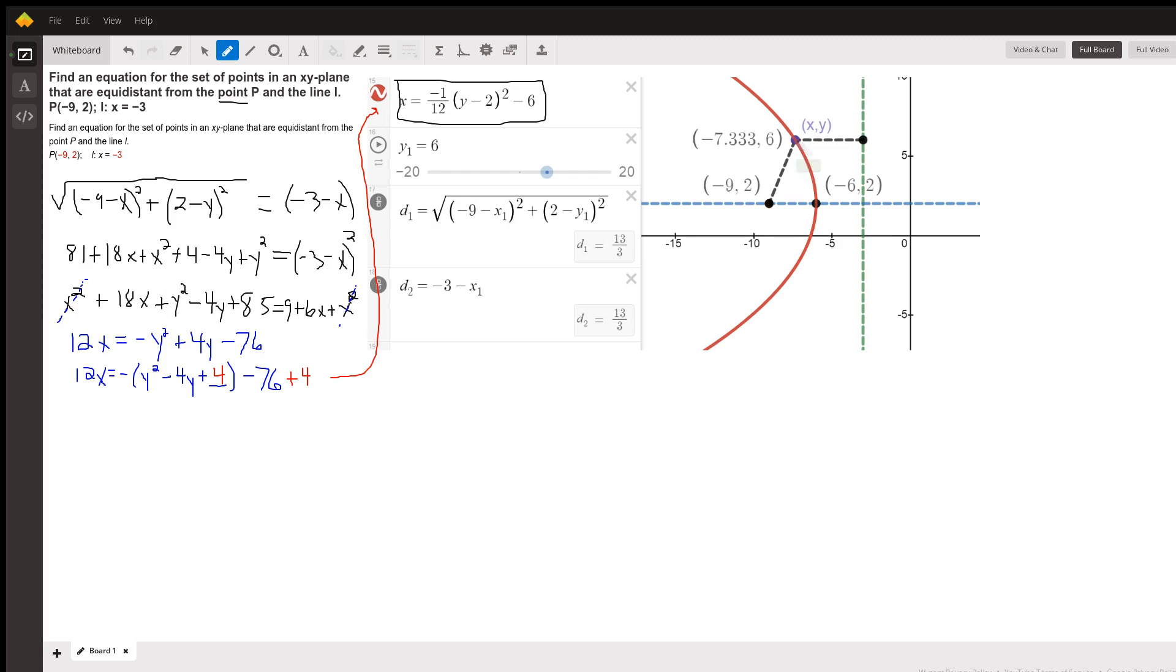If we pick any point in the xy-plane, and we want to find just those points that satisfy the condition that this distance to what we're calling the focus is exactly the same as the distance from that given point to the directrix, x equals -3, we can find this distance using the distance formula between the general point (x,y) and (-9, 2). That's what this is here, d sub 1, distance formula. In this case, when y is 6, the distance d1 is 13 thirds.